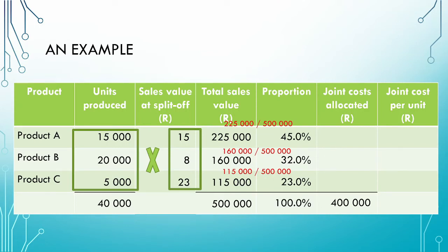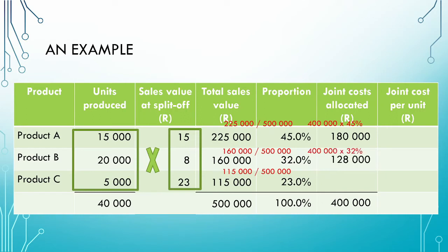We now have the proportion of each product's sales to the total sales at the split-of-point. To calculate the joint costs allocated to each product, we take the total joint costs of 400,000 Rand and multiply it by each product's proportion of sales value at the split-of-point. For product A, 400,000 Rand multiplied by 45% gives an allocation of 180,000 Rand. For product B, 400,000 Rand multiplied by 32% gives 128,000 Rand. For product C, 400,000 Rand multiplied by 23% gives 92,000 Rand. We now have our joint cost allocation for each product.